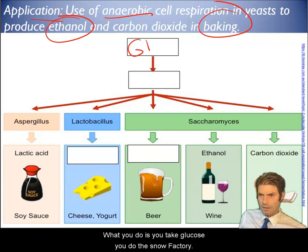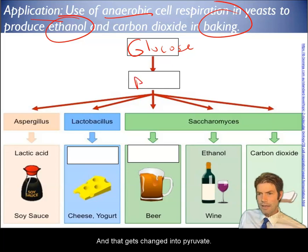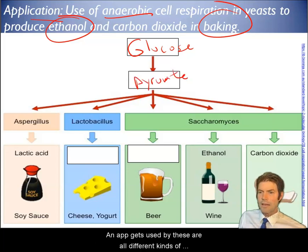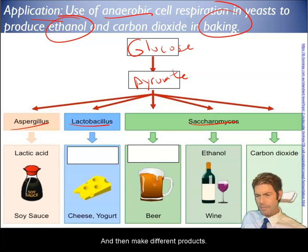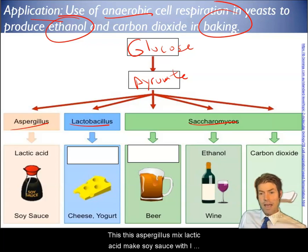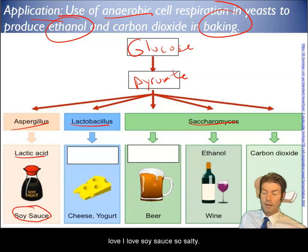What you do is you take glucose, you do this in a factory, and that gets changed into pyruvate. Then that gets used by different kinds of bacteria: aspergillus, lactobacillus, saccharomyces, and they make different products.